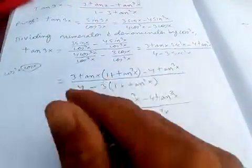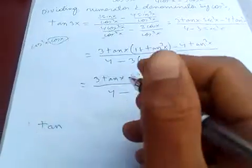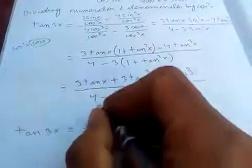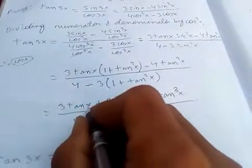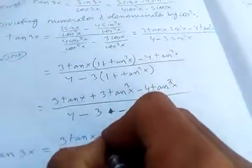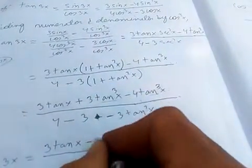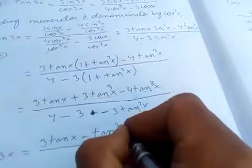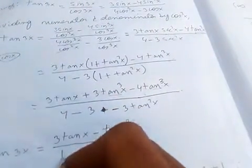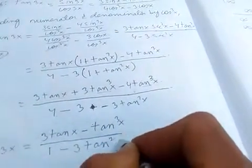Lastly, we get tan 3x equals, there is 3 tan x, and the tan cubed terms. If you subtract, minus tan³x, and below we have 1 minus 3 tan²x.